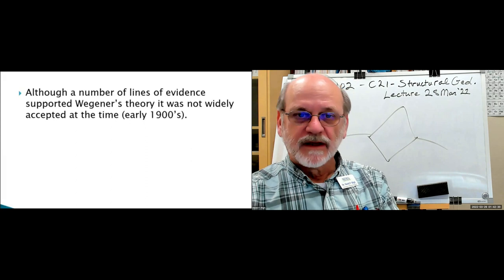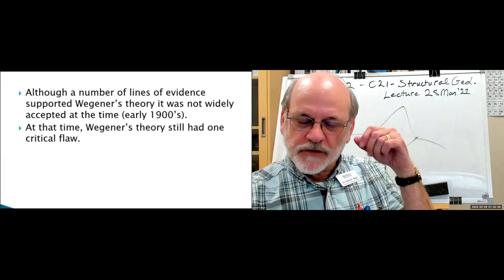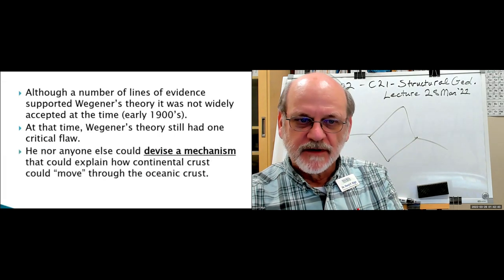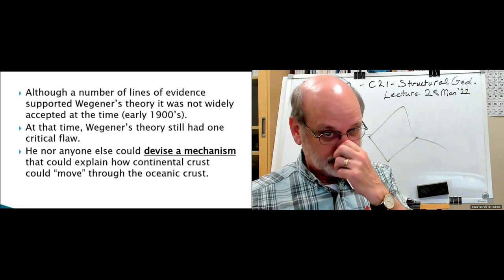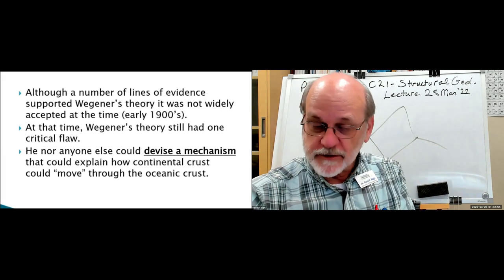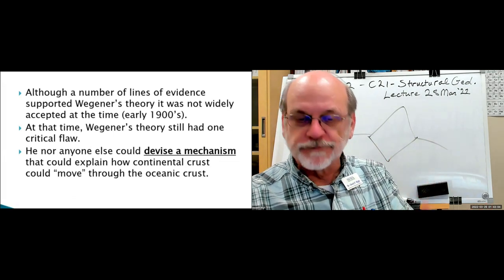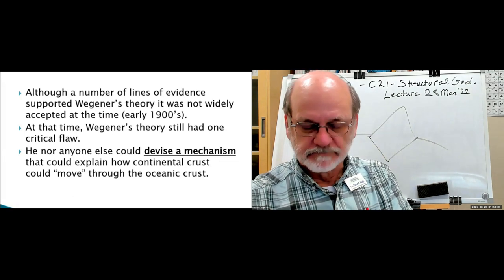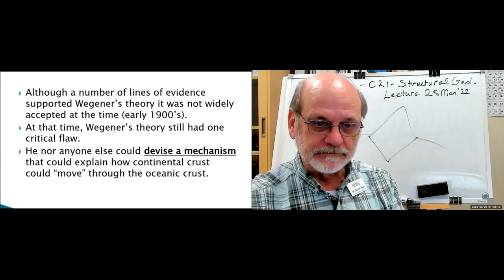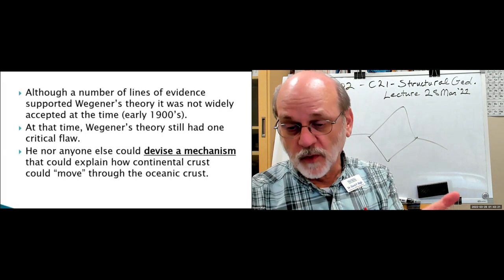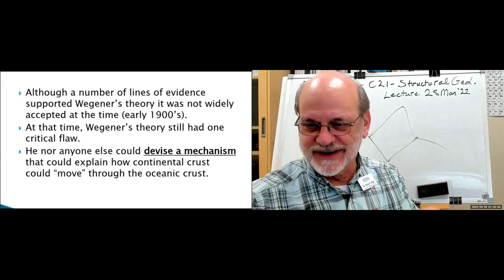In the beginning, scientists were very skeptical of Wegener's theory. The one critical flaw was that he could not explain how continental drift occurred. All the lines of evidence were supportive, but he couldn't tell anybody what forces were involved in moving the continents. That evidence came later, and eventually Wegener was vindicated. Scientists believed the crust was solid and there was no way for a continent to plow its way through solid crust.